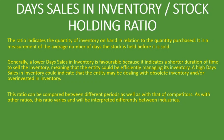This ratio can be compared between different periods of the company as well as with competitors. You can compare it with the previous year, previous quarter, or previous month depending on the period you're calculating, or over the last five years. You can also compare it to your competitors to see how far behind or ahead you are in terms of selling your inventory quickly.